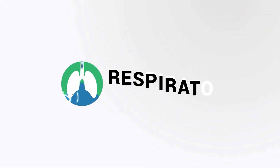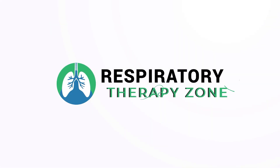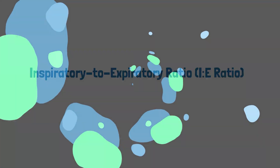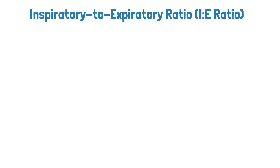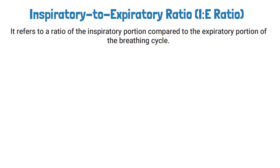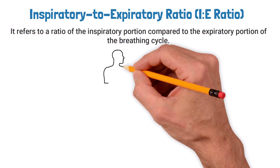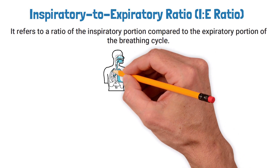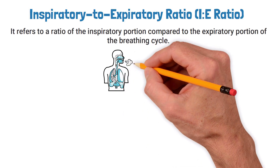The next setting that we're going to talk about is the IE ratio, or inspiratory-to-expiratory ratio. It refers to a ratio of the inspiratory portion compared to the expiratory portion of the breathing cycle.